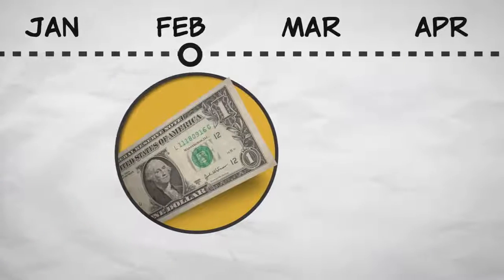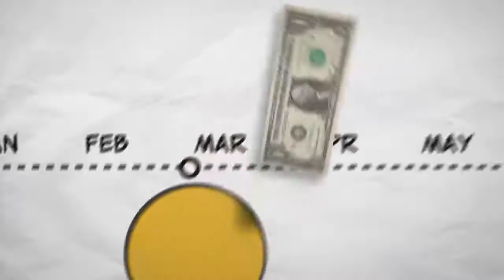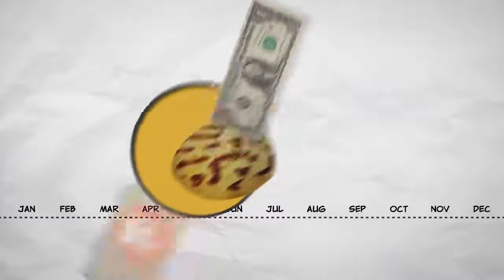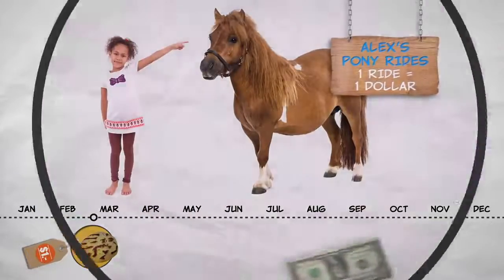Let's imagine the journey a dollar bill might take in a year. Imagine that the dollar bill starts with Tyler, who buys a pupusa from Don, the street vendor. Don gives it to his daughter, who spends it on a pony ride at the fair.